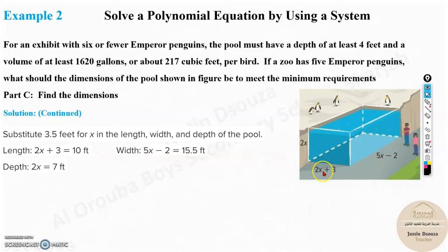And then how do you find the length and width? You need to just substitute. Instead of x, you need to put 3.5. 3.5 times 2 is 7 plus 3, it's 10. Same thing, 3.5 times 5 is 17.5 minus 2 will be 15.5. And lastly we have 2 times 3.5 is 7. So these are the answers. So you found the length, width, and depth.